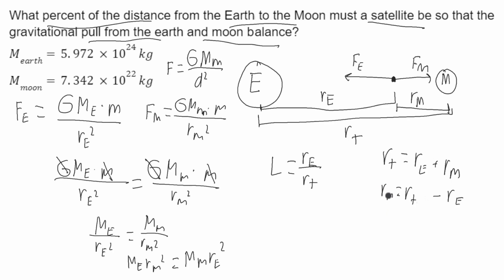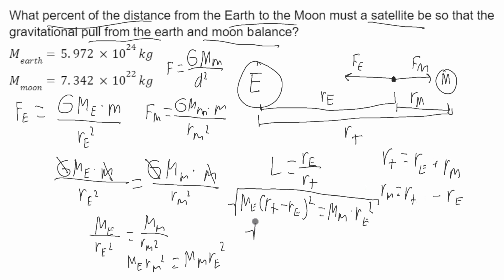Now I'll plug in the expression for RM. I'll get the mass of the Earth times (RT minus RE) squared, which is going to be equal to the mass of the Moon times RE squared. Taking the square root of both sides, I get the square root of the mass of the Earth times (RT minus RE) is equal to RE times the square root of the mass of the Moon.